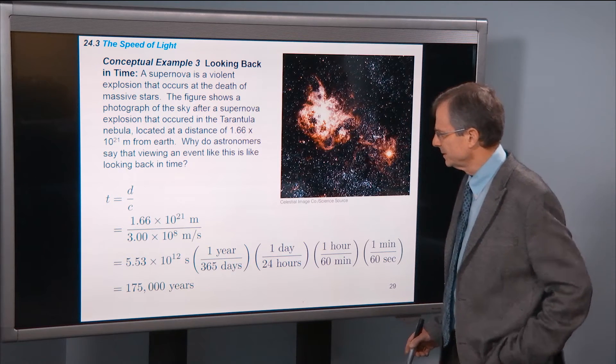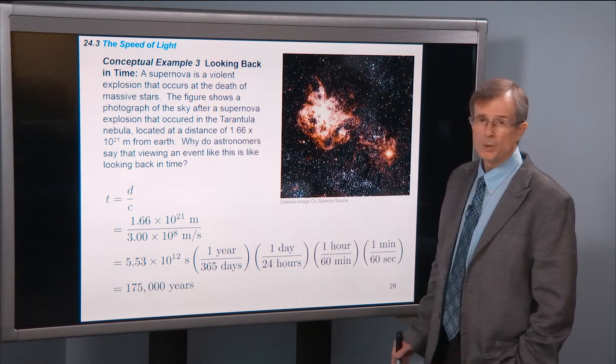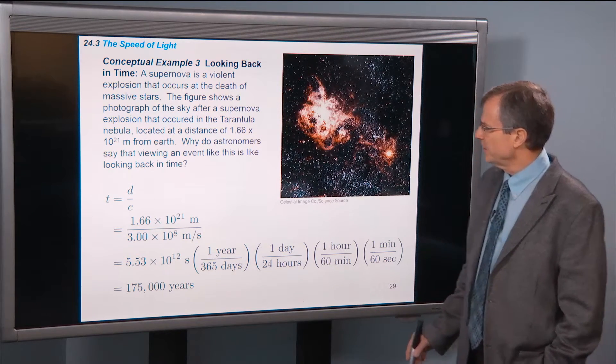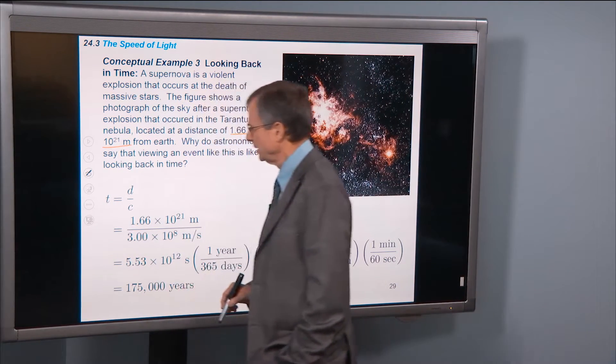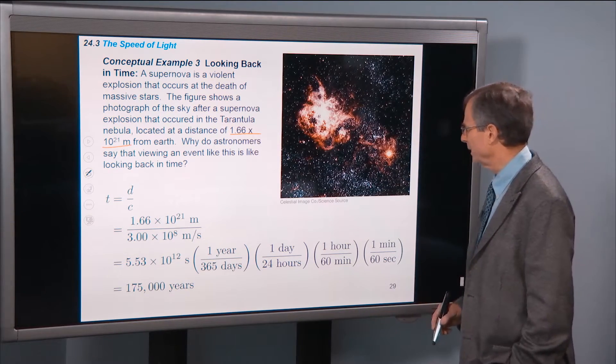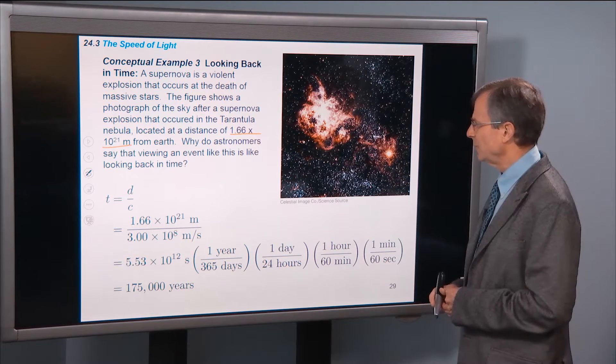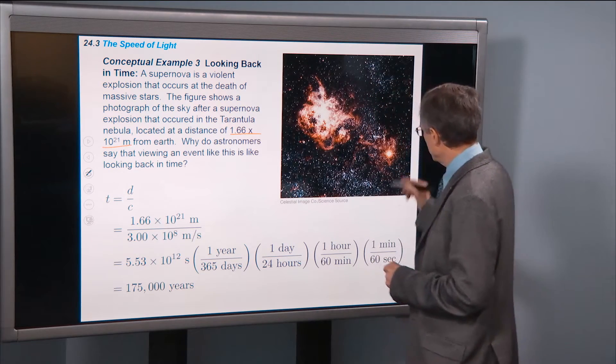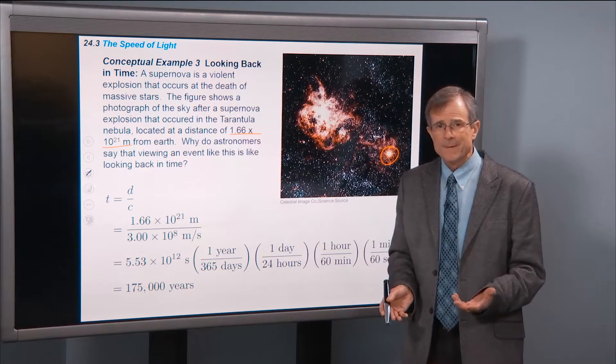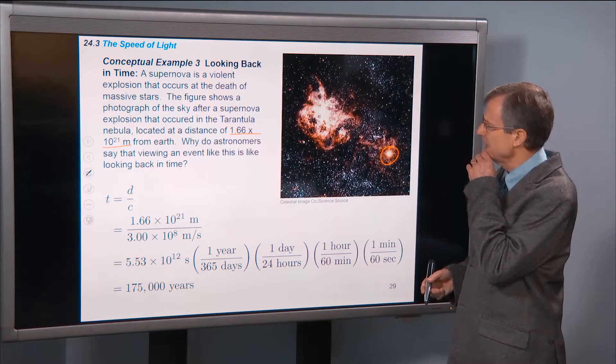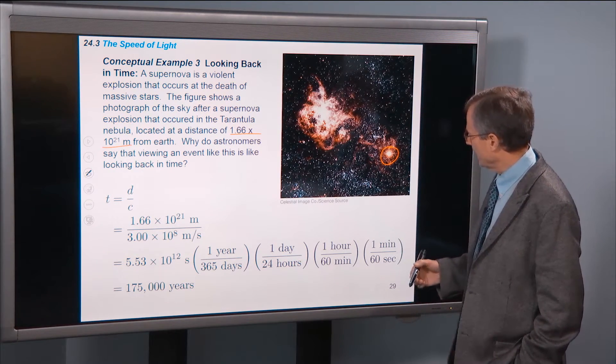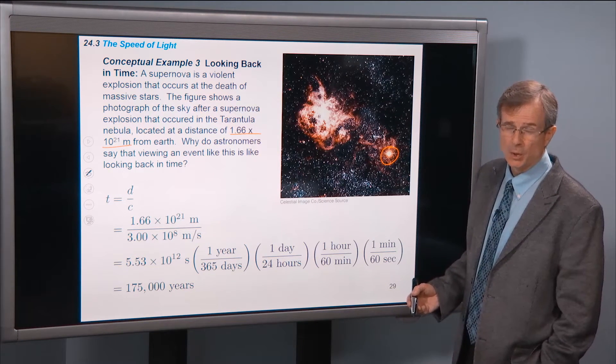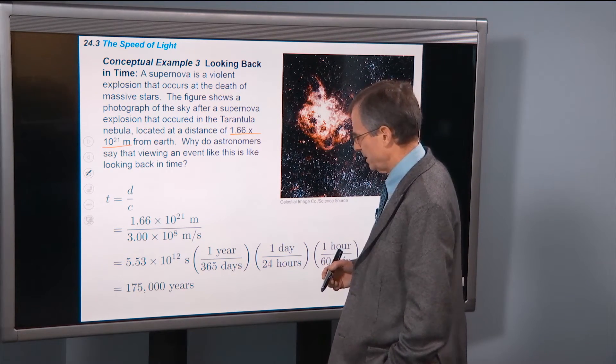Looking back in time, let's talk about a supernova explosion that occurred in the Tarantula Nebula. It's fairly near to the earth. It's a distance of 1.66 times 10 to the 21 meters in the Large Magellanic Cloud, as I remember. It might be the small one. But it's a nearby dwarf galaxy to us. And the question is, why do astronomers say that viewing an event like this is like looking back in time? So there was a star that burst in that cloud. It was 10 or 20 years ago, as I remember. And that star rivaled in brightness the entire brightness of the galaxy. And so we'd like to know how long ago that occurred, compared to when the light arrived at us here at earth.